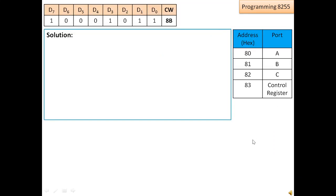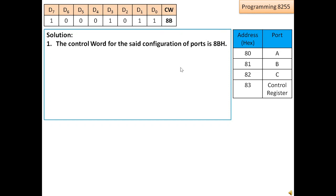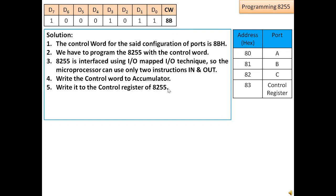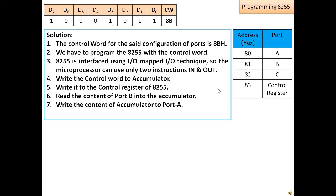The solution steps are: first, the control word 8B for the port configuration must be selected. Then we program 8255 with this control word. Since 8255 is interfaced using IO mapped IO technique, we use only IN and OUT instructions available in 8085. Write the control word to the accumulator, write it to the control register of 8255, read the content of Port B into the accumulator, write the content of the accumulator to Port A, then stop.